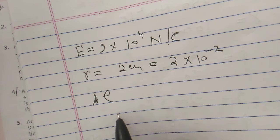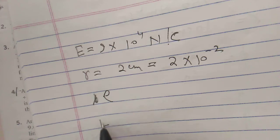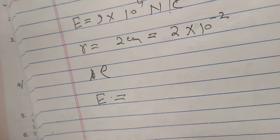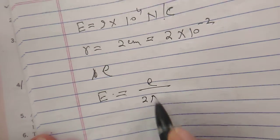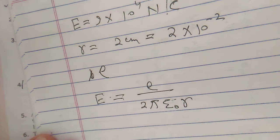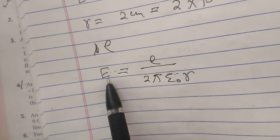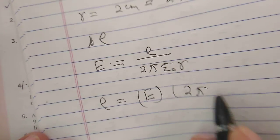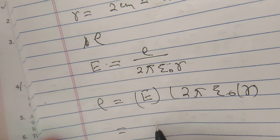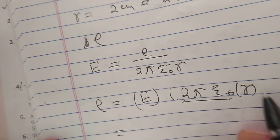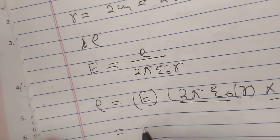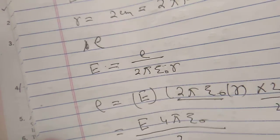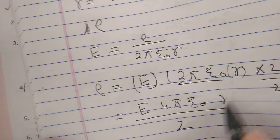We know the formula: E = 2ρ / (2πε₀r). Rearranging, ρ = E × 2πε₀ × r. To simplify, multiplying and dividing by 2 gives us ρ = E × r / (2 × 4πε₀ × ½), bringing in the standard form with 4πε₀ in the denominator.